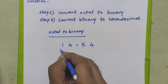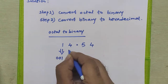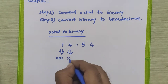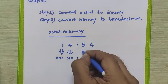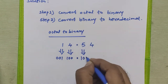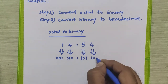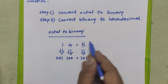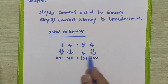The binary equivalent for 1 is 001, for 4 is 100, point, for 5 the binary equivalent is 101, and for 4 this is 100. So we have converted this octal number to binary.